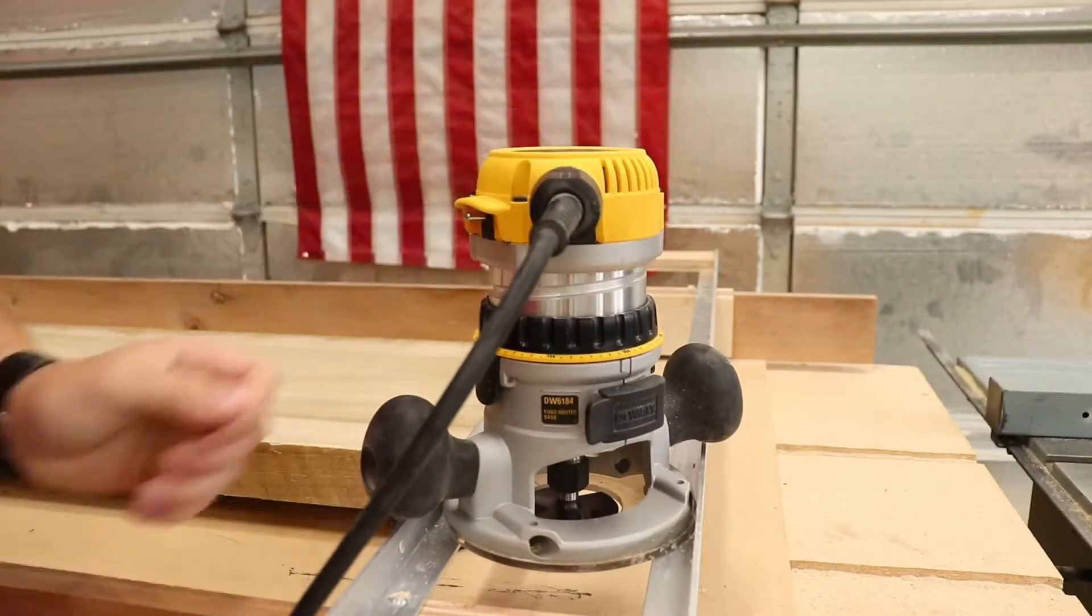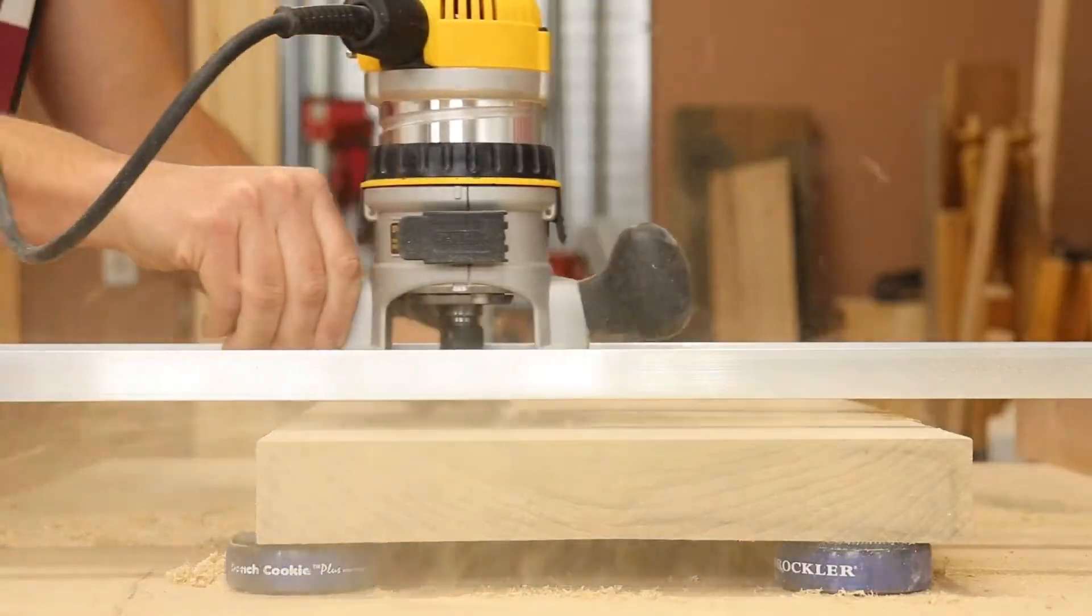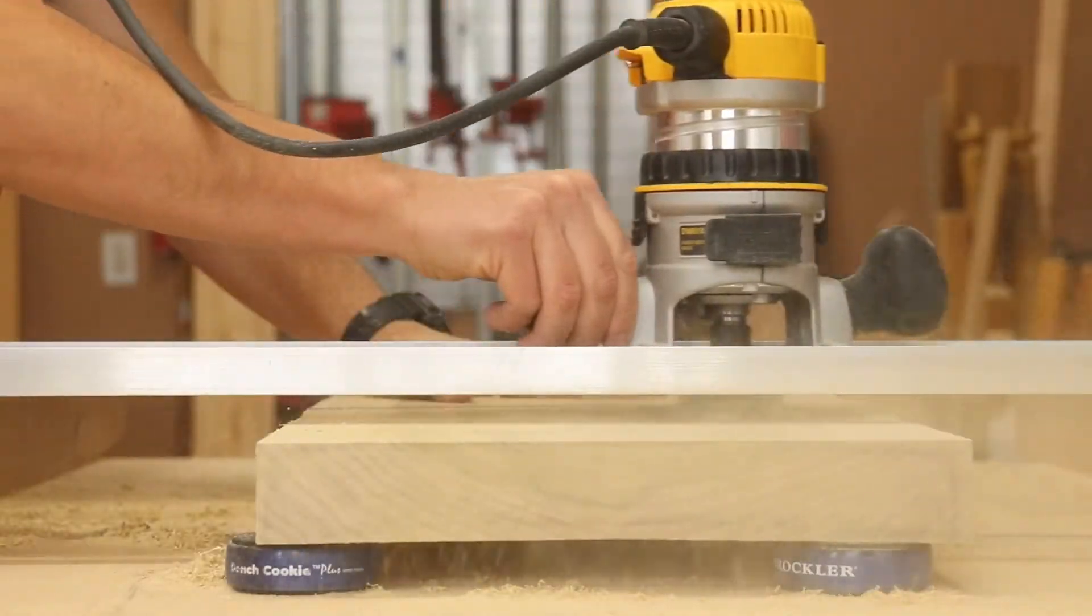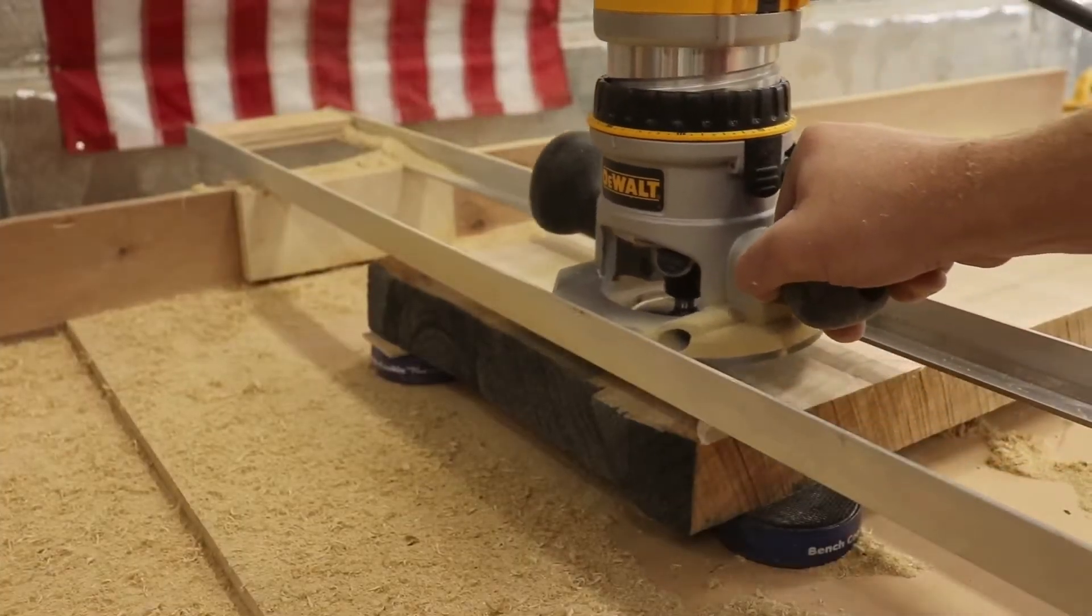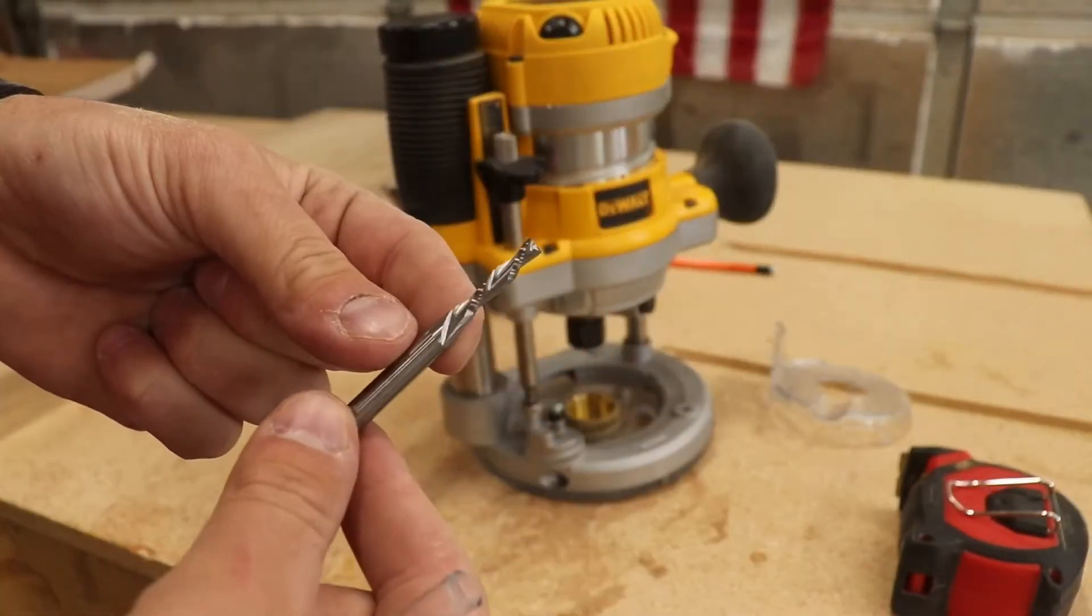I had a bunch of poplar left over from previous projects so I thought a coffee table would be a perfect quick project and use up some of the wood. I only flatten one side of the piece because I'll be running it through my planer to get the correct thickness.